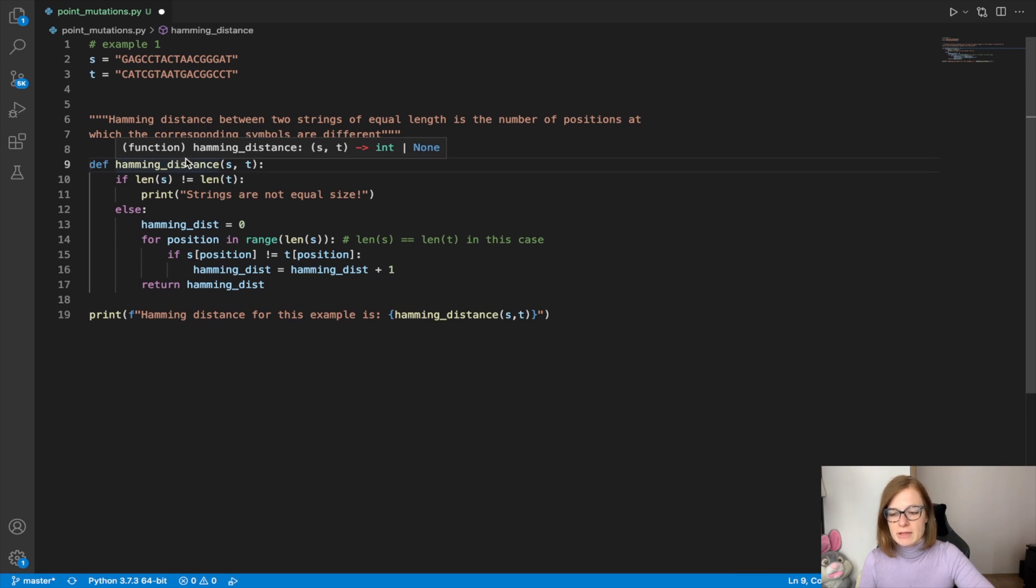So we start by defining the Hamming distance function which takes two parameters as an input. In our case the strings S and T. So first thing we are going to do is check whether the strings are equal length or not. We can do that by using the inbuilt function from Python called len which gives back the length of a string.